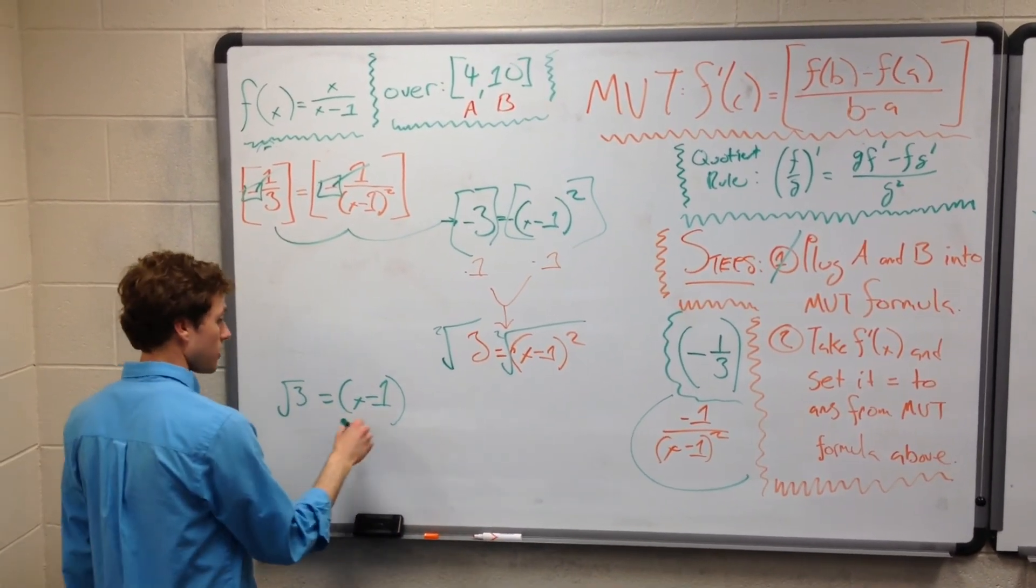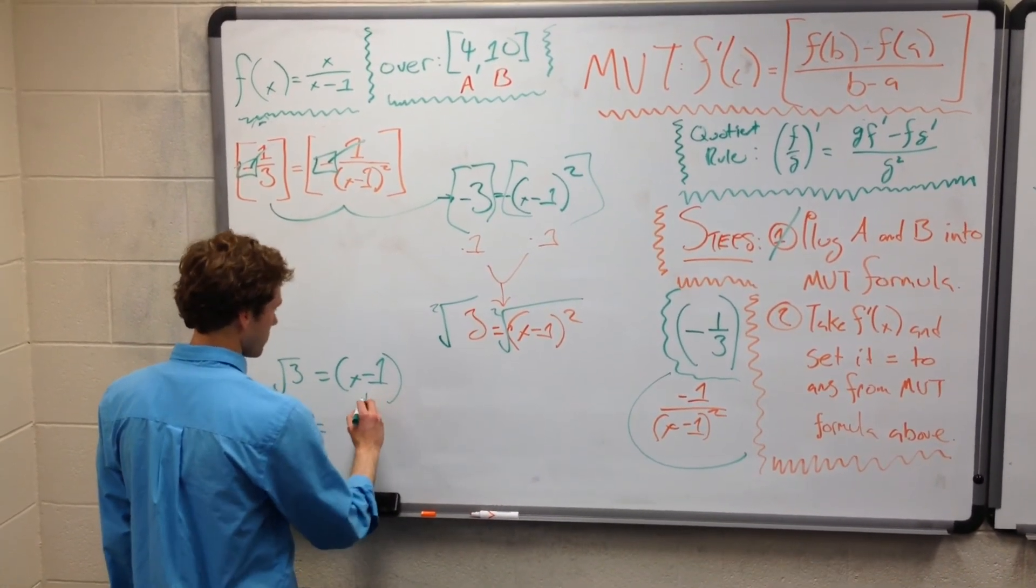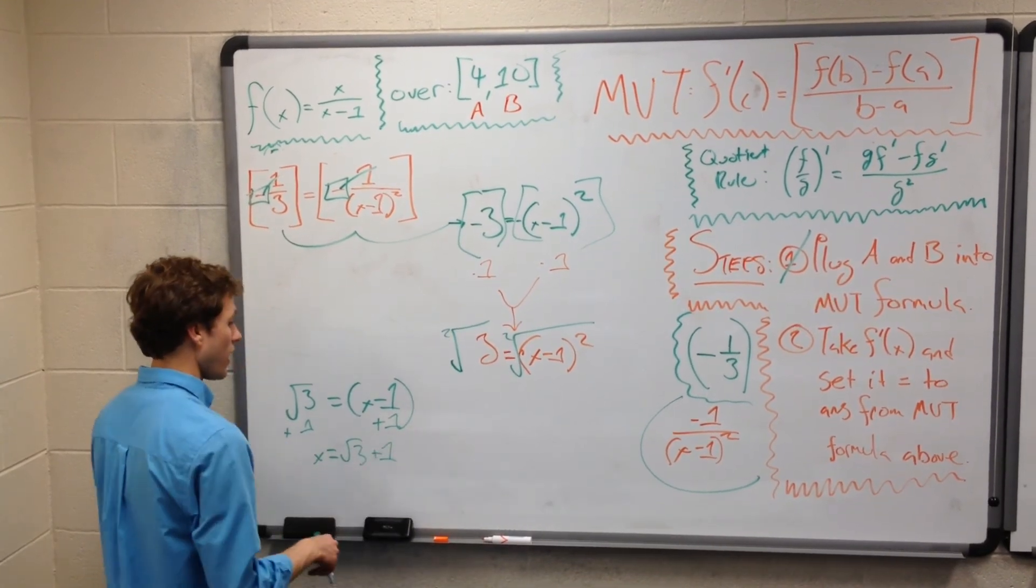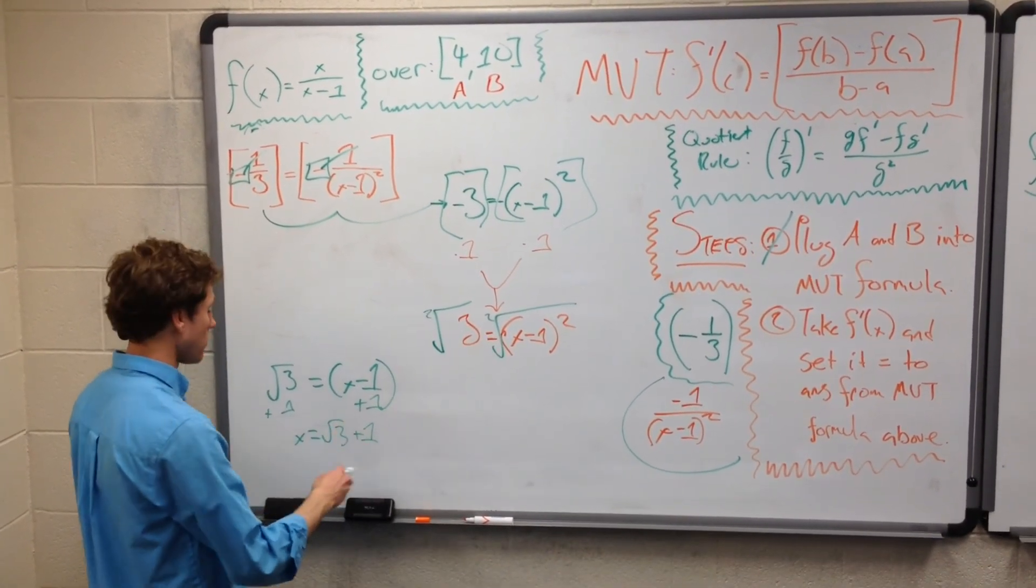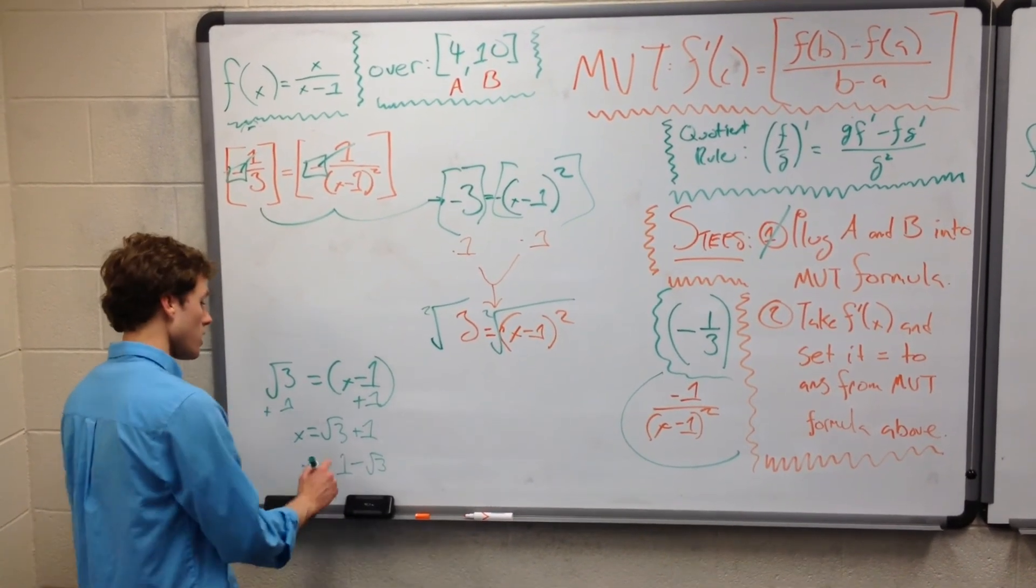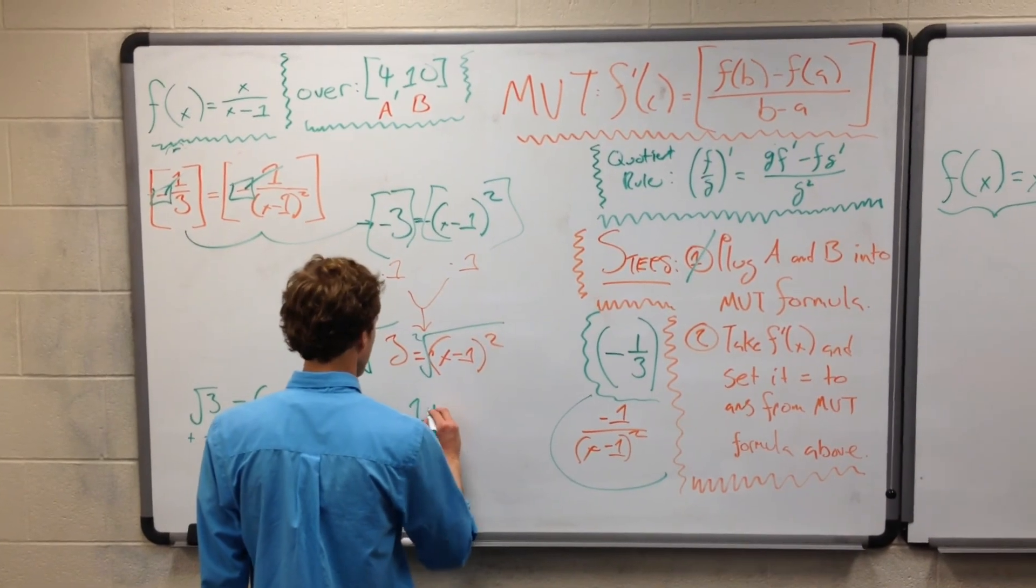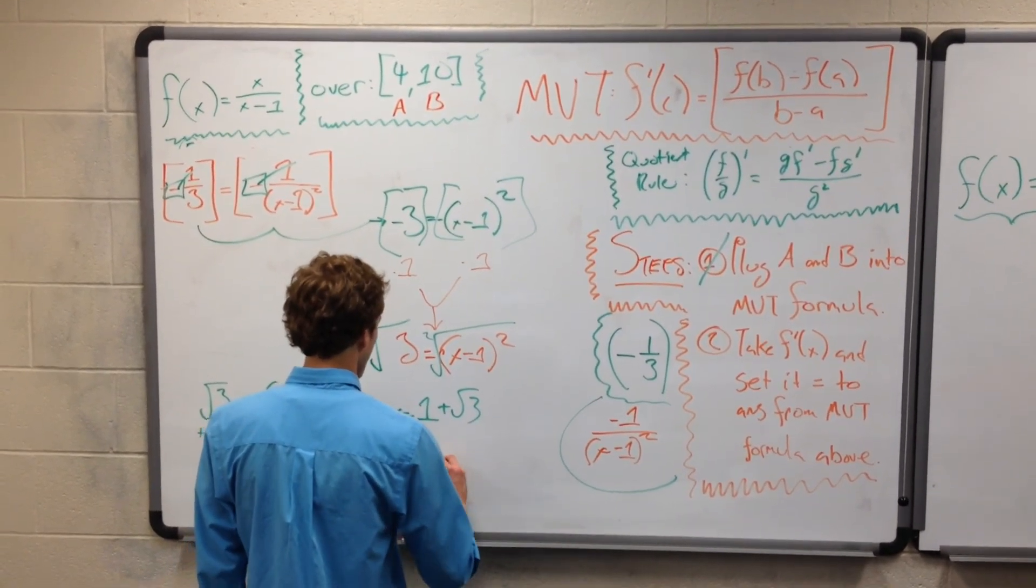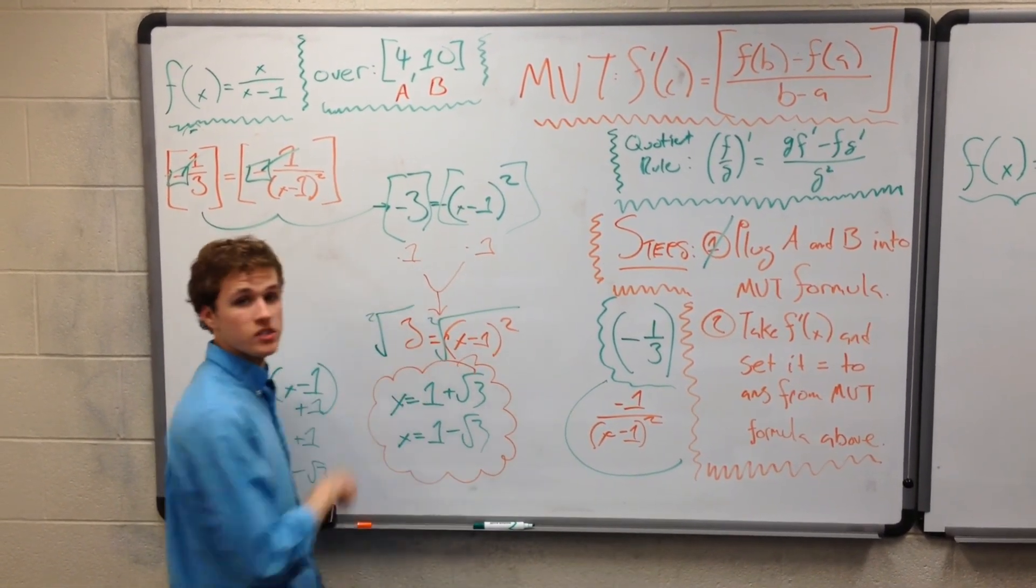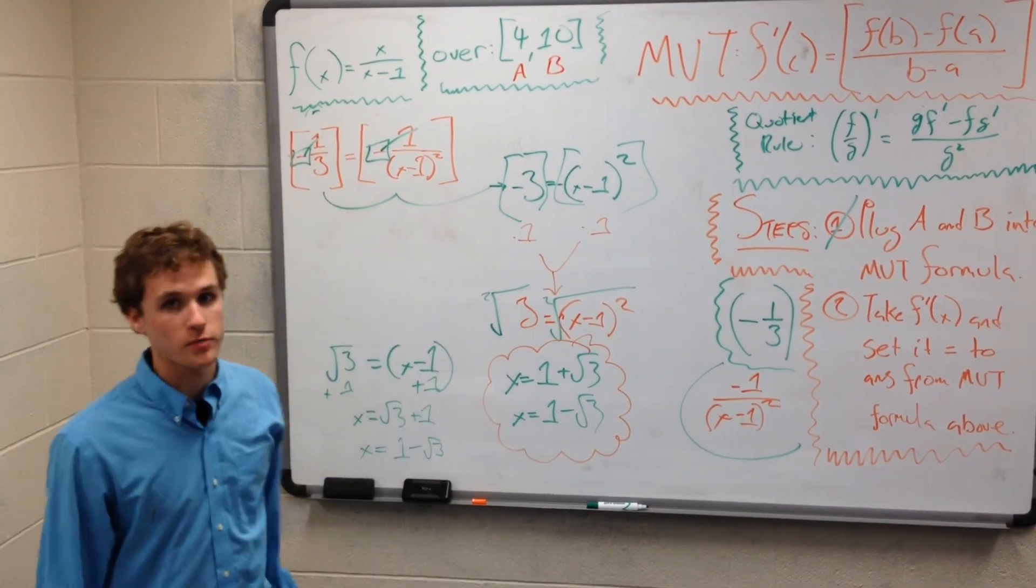So we can pull 1 to the other side. So X equals, let's add a 1 over here. X equals radical 3 plus 1. And also because this is squared, it's a radical. X equals 1 minus radical 3. So to write this in a more attractive way, we have that X equals 1 plus radical 3, and X equals 1 minus radical 3. So that's it. We're finally there. There's a lot of work, but this is what the mean value theorem gives us for the function F of X equals X over X minus 1.